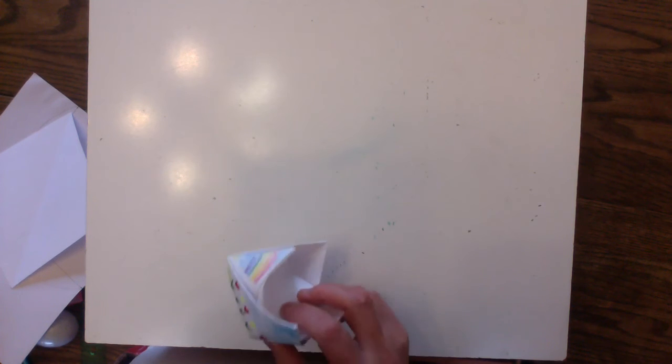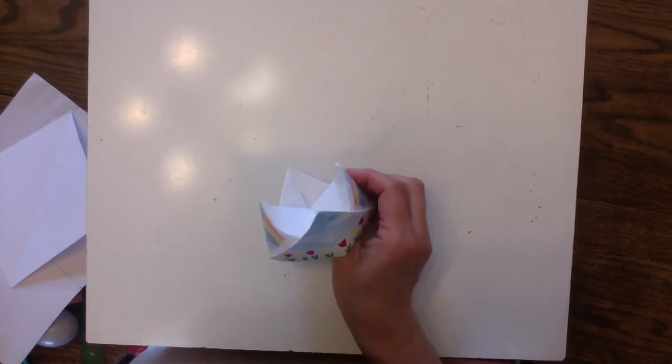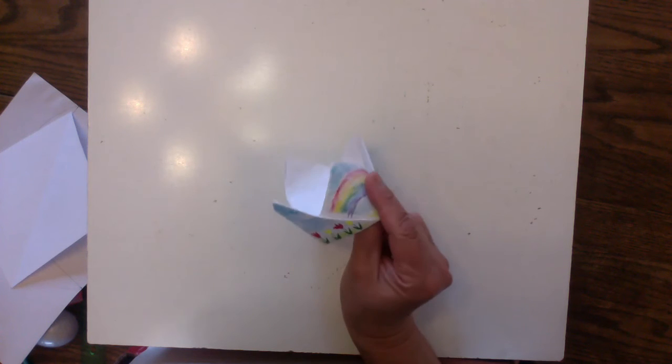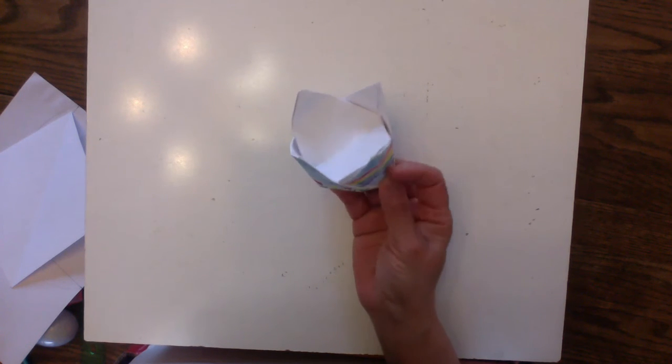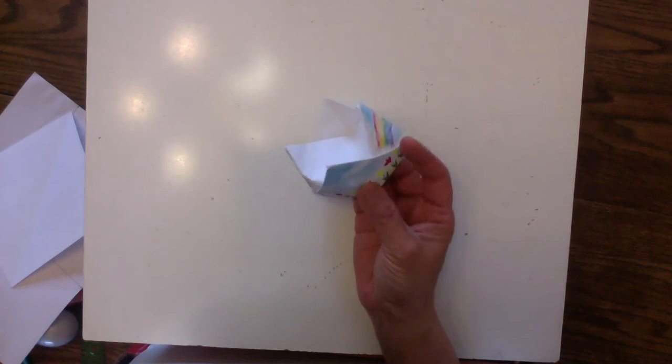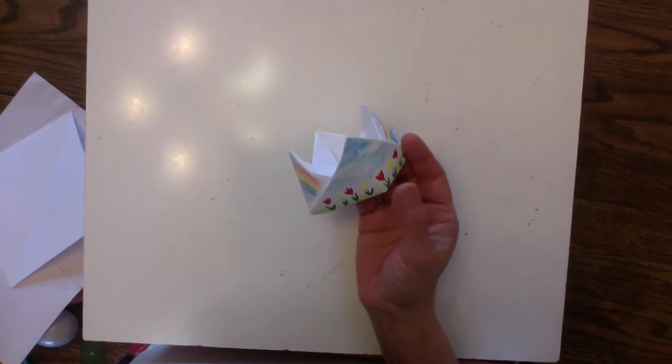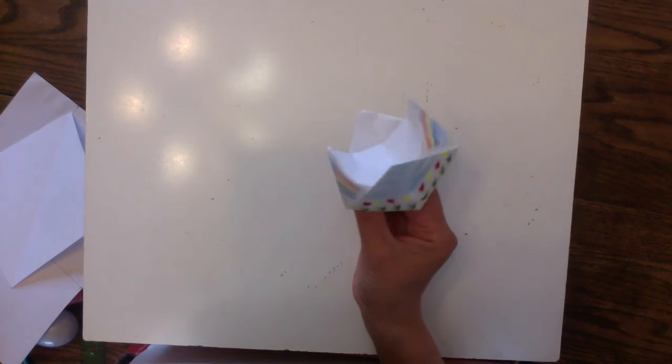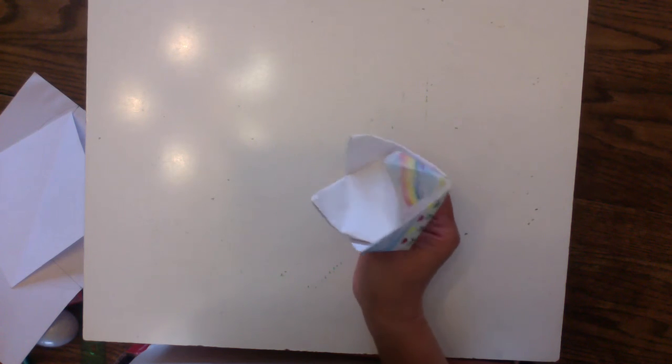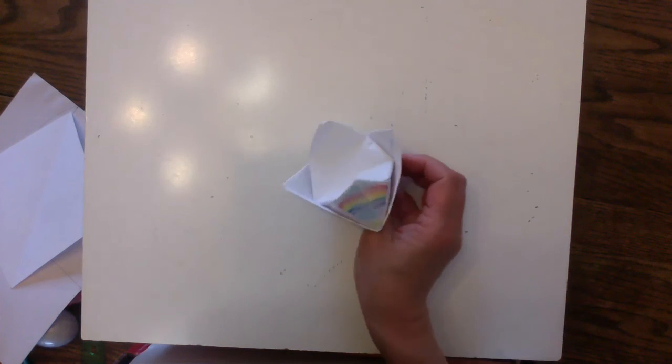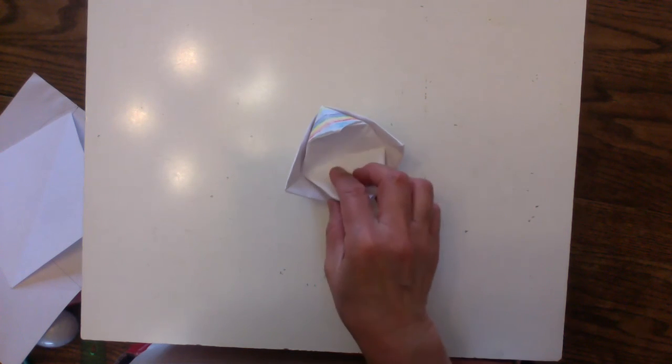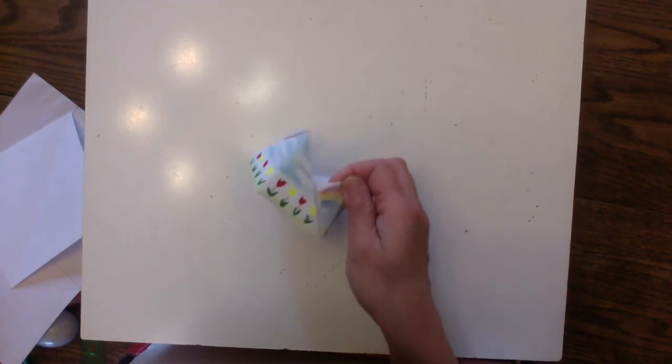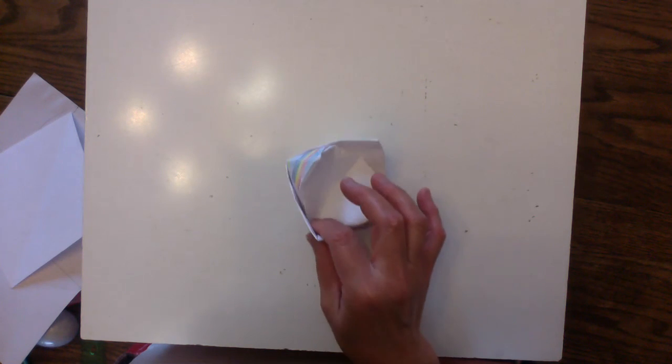If you don't have the origami paper, no problem. You can just use the blank white paper. Actually, I like that way better because instead of origami colors, you can draw on it. I put the tulips and the rainbows all around. You can create your own drawing on this. You can put an egg right there.